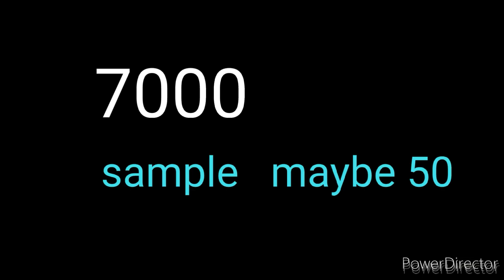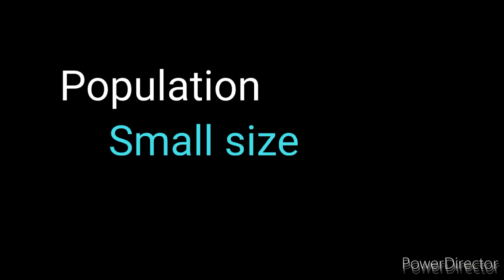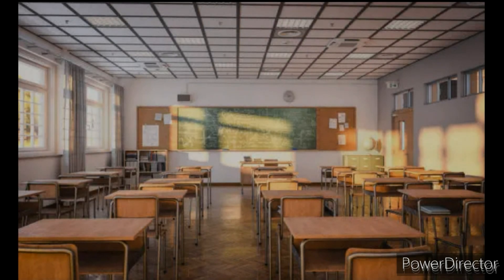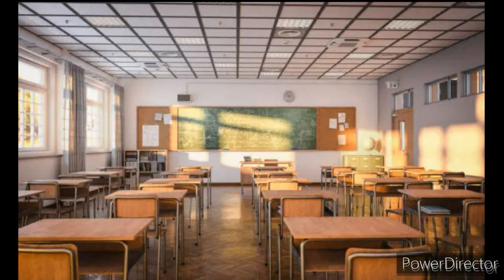Whenever we have a very large population, for instance 7,000, we need a sample to represent it. If the population is small — for instance, finding the mean mark of your high school class — it is easy to get the actual population parameter. However, there is also a situation where we are forced to use a sample even though the population is not very large, which I'm about to demonstrate.